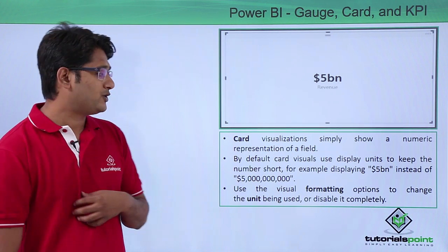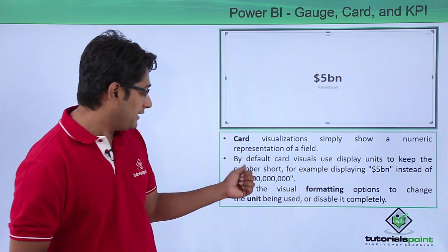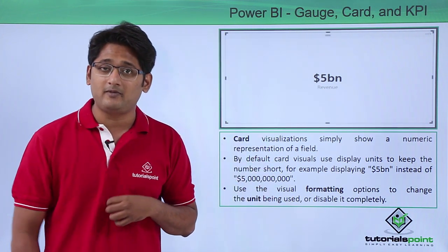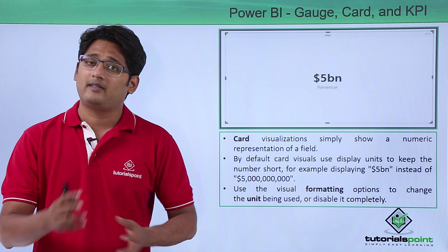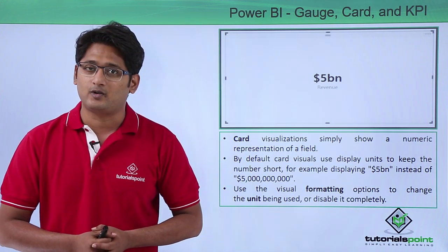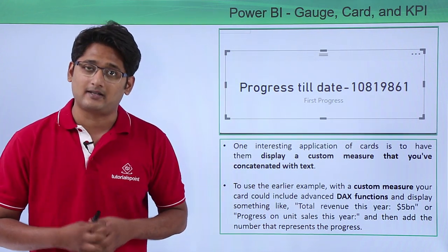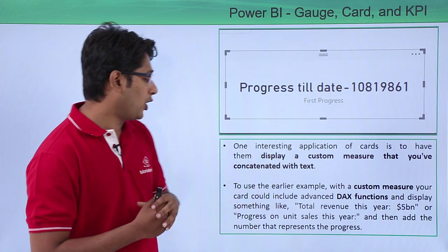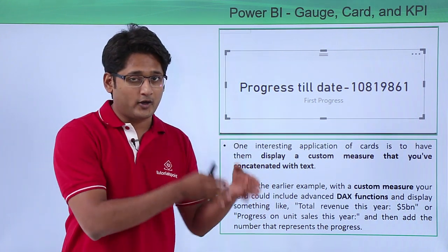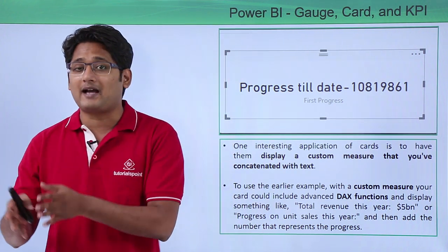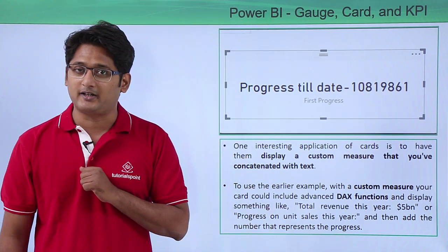The card visualization is simply a numeric representation of a field. The most common usage is to keep the number short — for example, 5 billion rather than 5 followed by nine zeros. It is completely up to you what kind of representation you want to show. Another thing about card visualization is that we can concatenate it with certain text, such as showing 'progress till date' followed by a number.